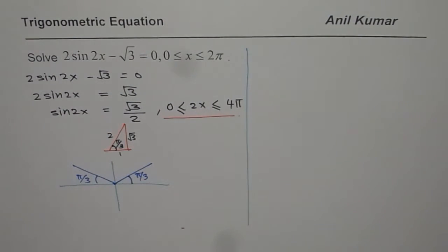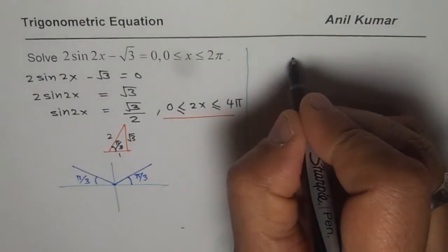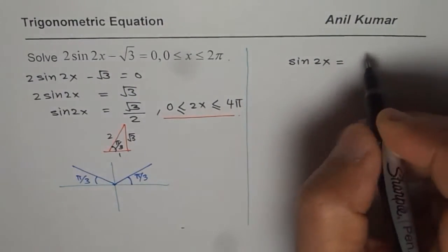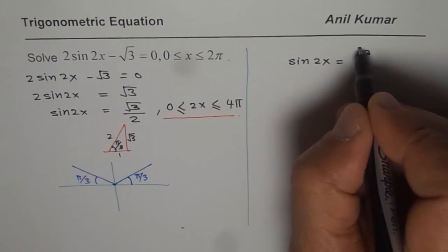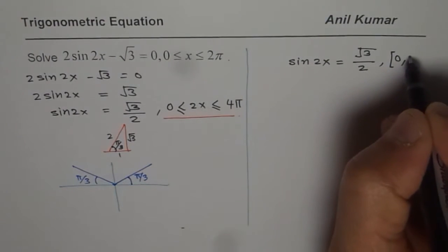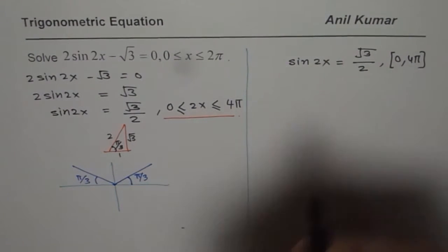So the solutions for this equation—this is most important before you get into really solving trigonometric equations. When we have this within the interval 0 to 4π, that means two circles.